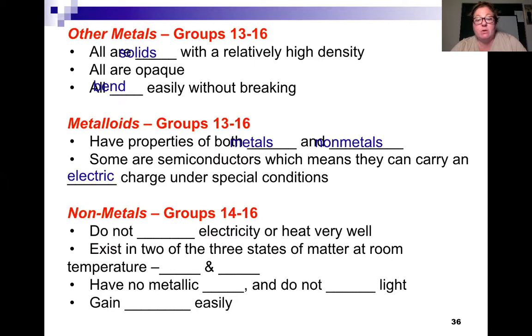The non-metals, group 14 through 16 above the metalloids, they do not conduct electricity or heat very well. They exist in two of the three states of matter at room temperature. They are either gases or solids. They have no metallic luster, and they do not reflect light, and they do gain electrons easily.